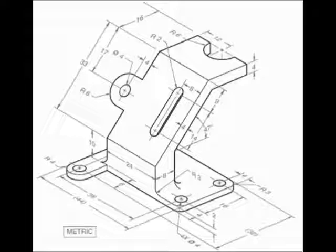I'll need the partial left view to show that, and I can do a partial bottom view to show the bottom of the component and how the mounting holes would look. The hole in the back is not visible but at the bottom of the question it says 4 times diameter 4, meaning there are 4 holes in the bottom, so we can assume there is a hole in the background.